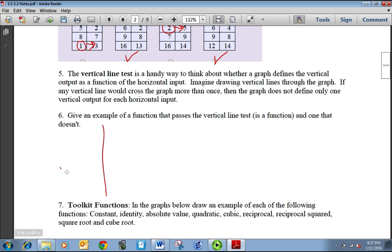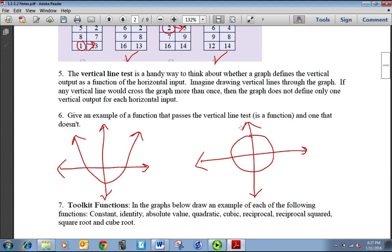So give an example of a function that passes a vertical line test and one that doesn't. So for one that passes, gives me something like a parabola. For one that doesn't pass, it could be something like a circle. Because if I draw a vertical line, I'm hitting two points.